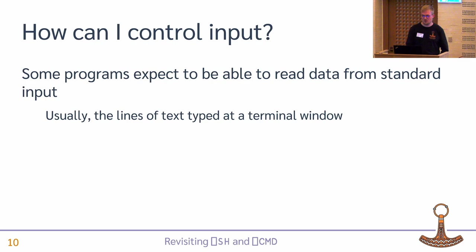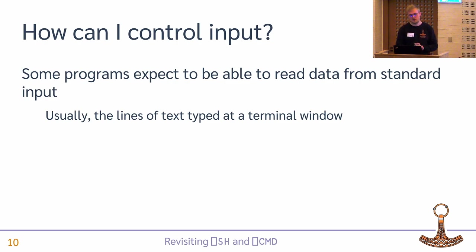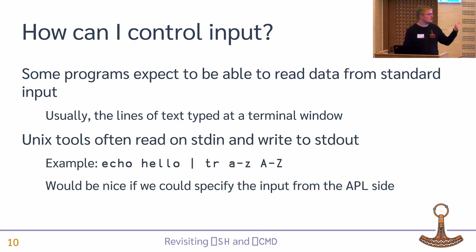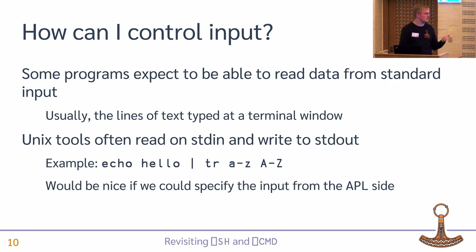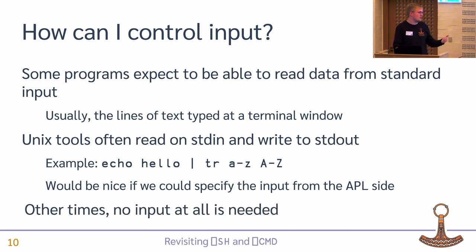Some programs expect to be able to read data from standard input. Usually when running interactively in a terminal window, it's just lines of text typed by the user. Unix tools often work in the way that they take data on standard input and produce some on standard output — that's what makes pipelines so easy to write. It would be very nice if we could specify the standard input from the APL side. Of course, other times we don't need any input at all.